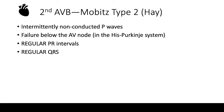Second degree type two is called Mobitz II or Hay block. In type two, you have intermittent non-conducted P waves due to a failure below the AV node — in the His-Purkinje system. The key differentiator from type one is that PR intervals and QRS complexes are regular. Knowing this single fact lets you quickly distinguish type one from type two on an EKG.